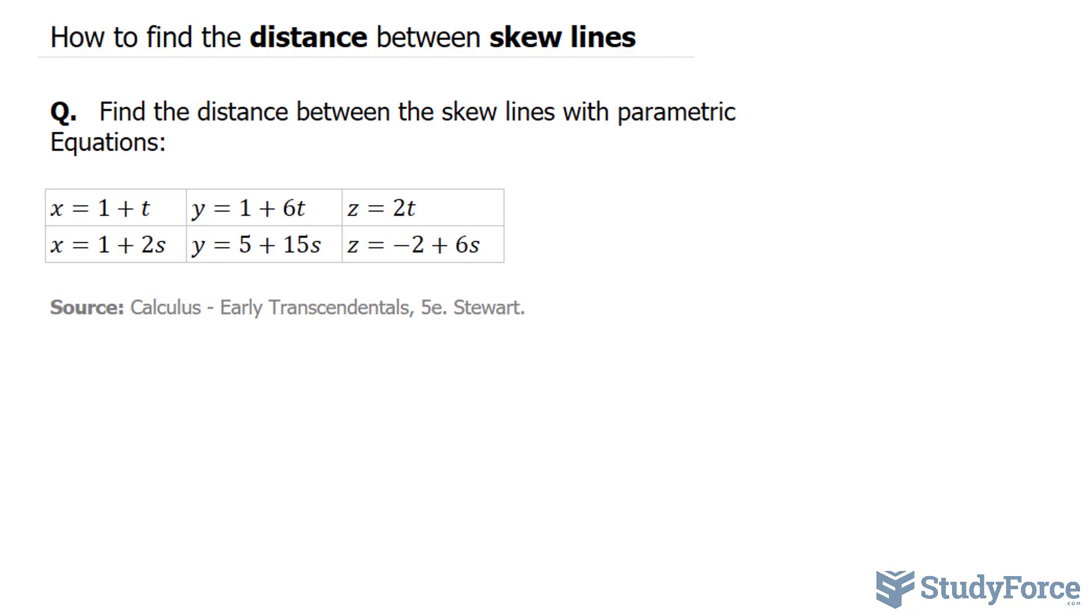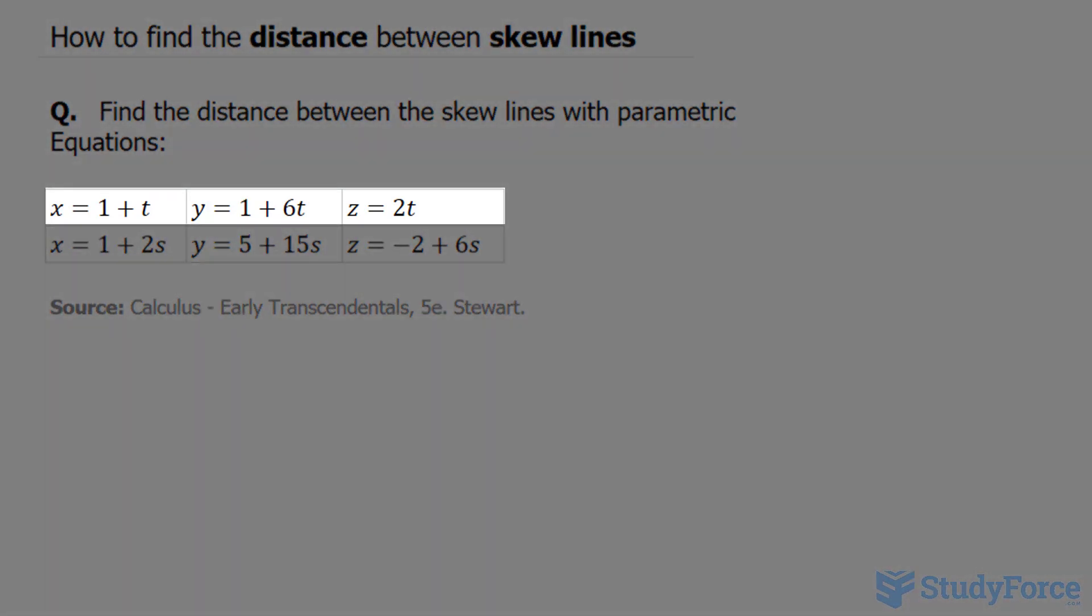What we're looking for here is the distance between these two lines. The first thing that you want to do is find the direction vectors of these parametric equations. Notice, the first row represents parametric equations for one line, and it's represented by the factor T. And in the second row, we have another set of parametric equations with S.